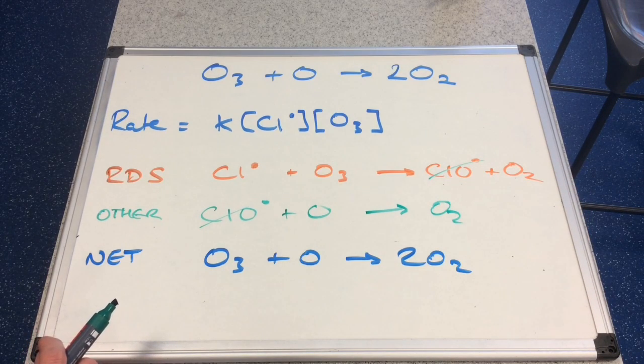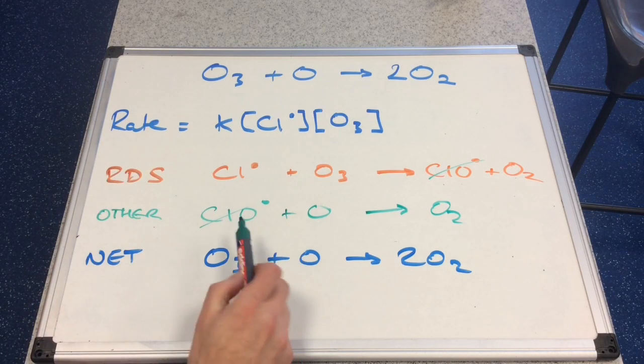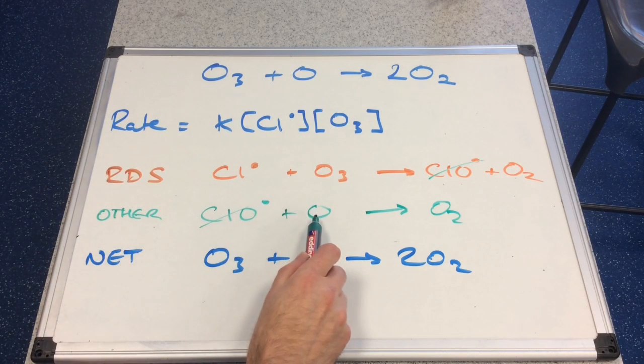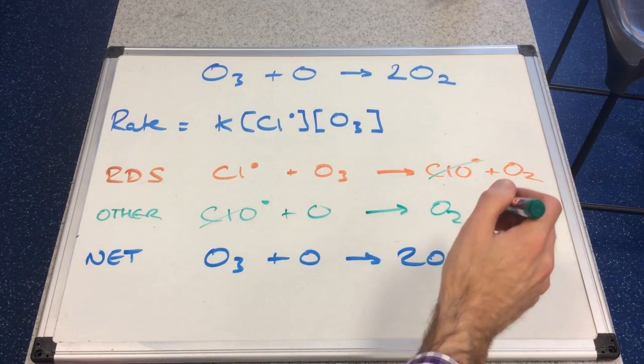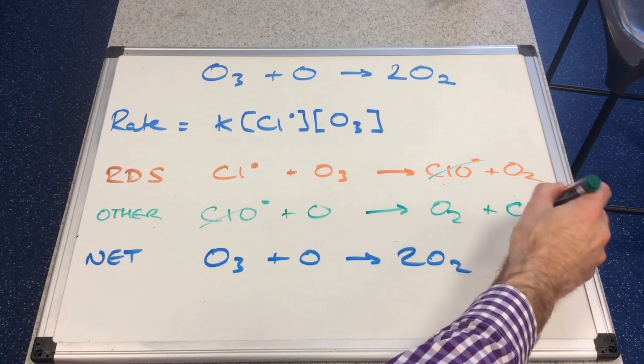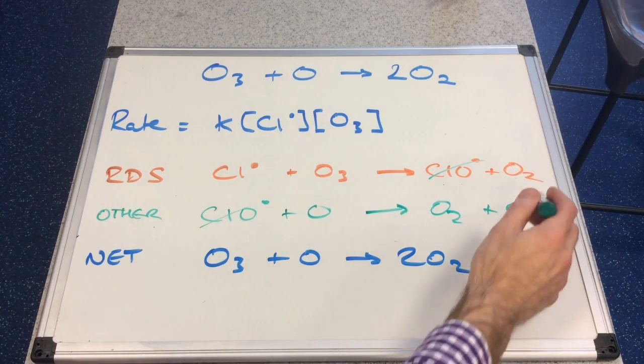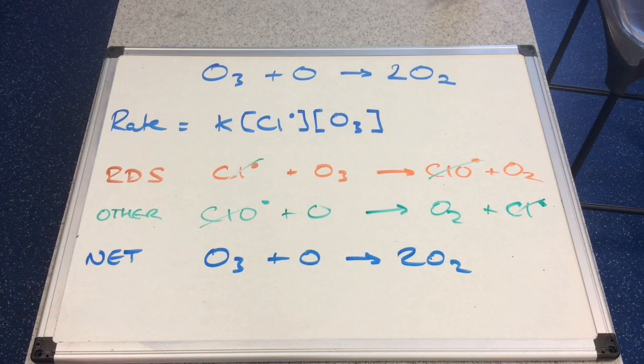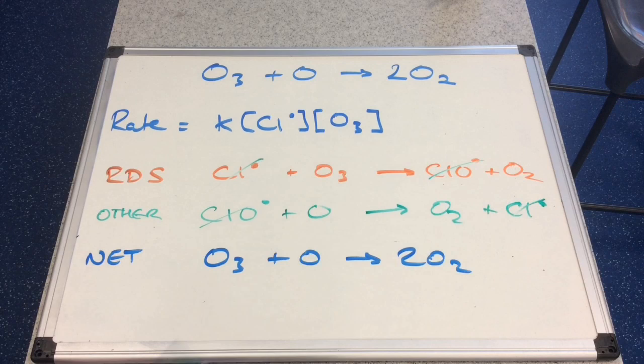And the only other thing we need to do is we need rid of this ClO radical. Well, if you look, we've got a radical and a stable molecule over here. So if we make a new radical, and it's obviously a chlorine radical that's going to be left over, then that will cancel with that. And we have made the equation that we need. O3 plus O makes two O2s.